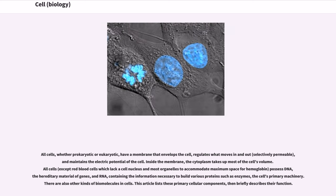All cells, whether prokaryotic or eukaryotic, have a membrane that envelops the cell, regulates what moves in and out, selectively permeable, and maintains the electric potential of the cell. Inside the membrane, the cytoplasm takes up most of the cell's volume.